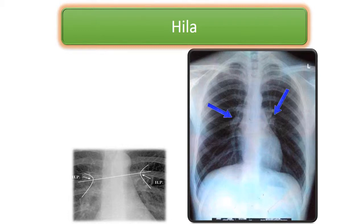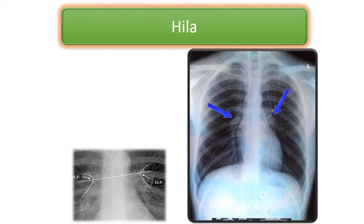This is the third part of the chest X-ray lecture for radiologists and radiology students. The blue arrows are showing the hilum on both sides. The left hilum appears slightly higher than the right hilum, which is a normal finding. If any elevation of the hilums is found, we consider volume loss due to pathology.